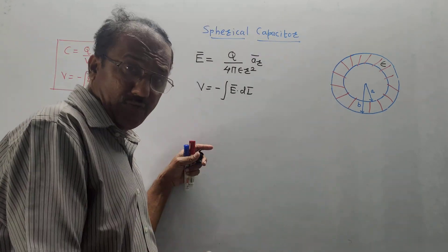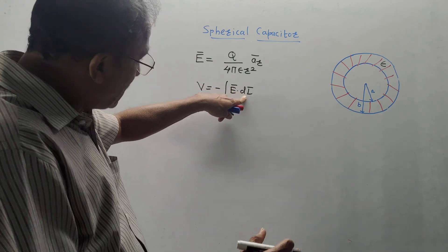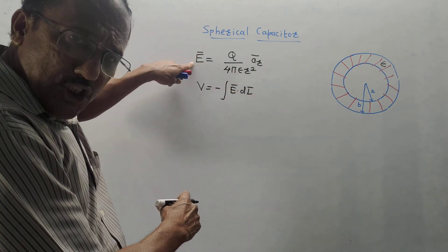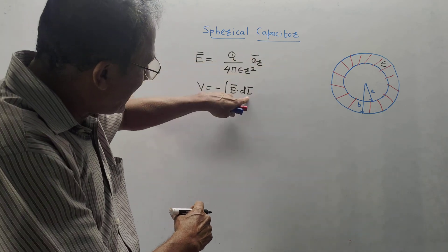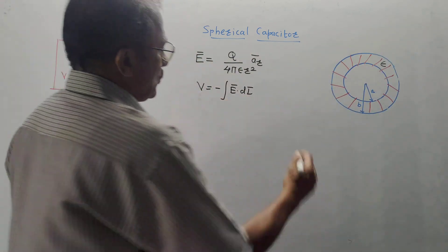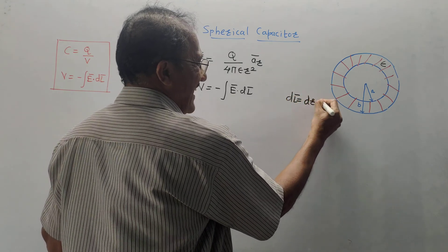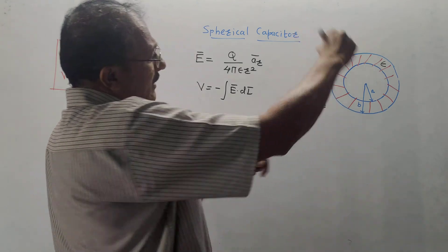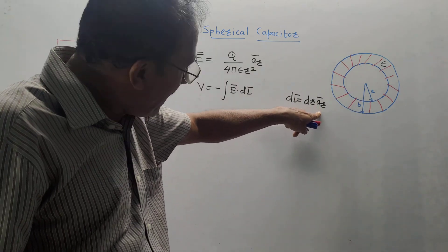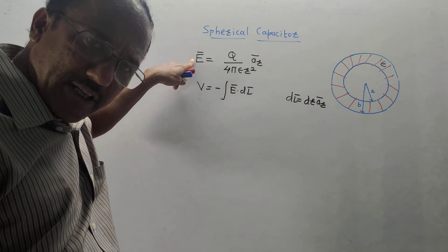To keep things simple, don't memorize lengthy equations. The direction of E-bar is â_r, so dl-bar must also be along â_r. You can conclude this because when taking the dot product, both vectors must be in the same direction.